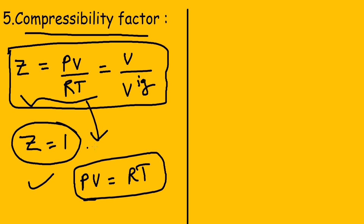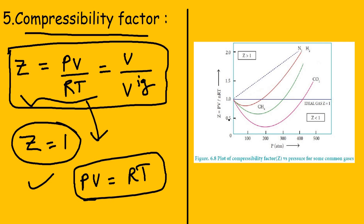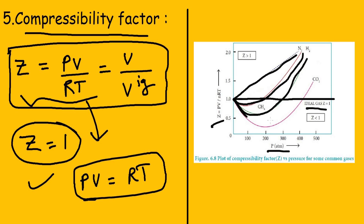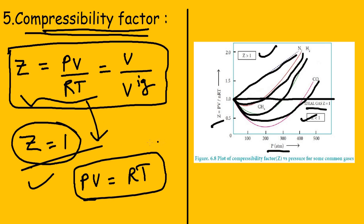For real gases I have a plot of compressibility factor Z versus pressure. For real gases such as nitrogen, hydrogen, methane, and carbon dioxide, Z is not equal to one — it is either greater than one or less than one. The compressibility factor gives a measure of how much a gas deviates from ideal gas behavior. For an ideal gas Z equals one; for real gases Z is either greater than or less than one.